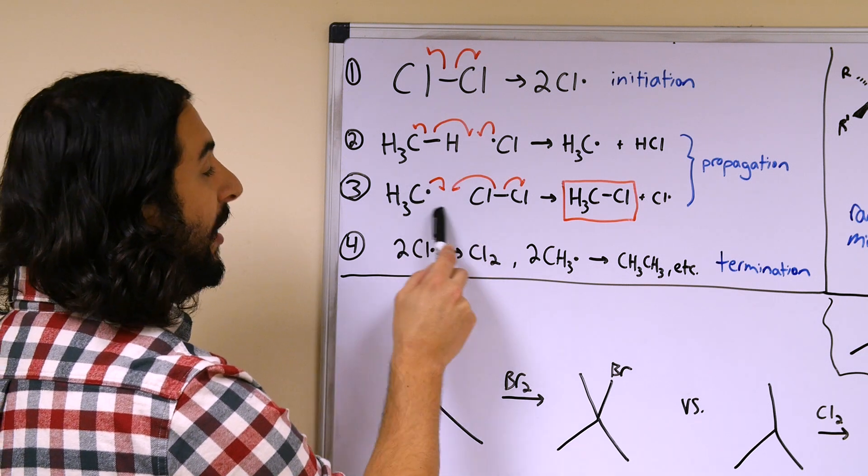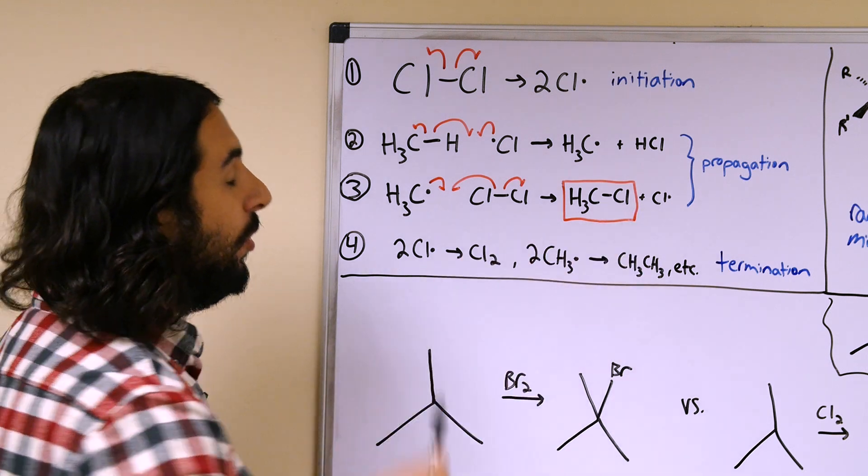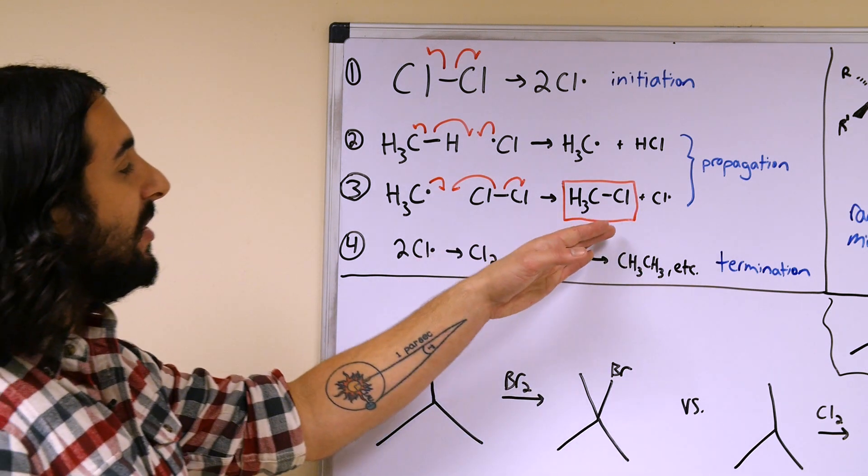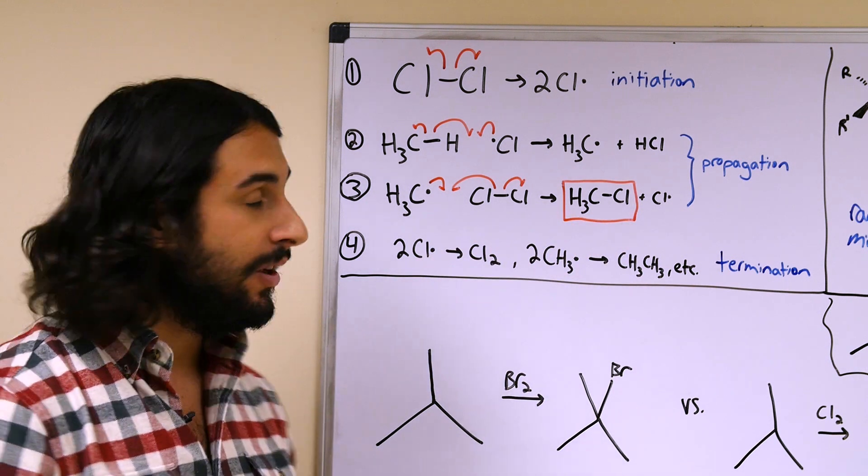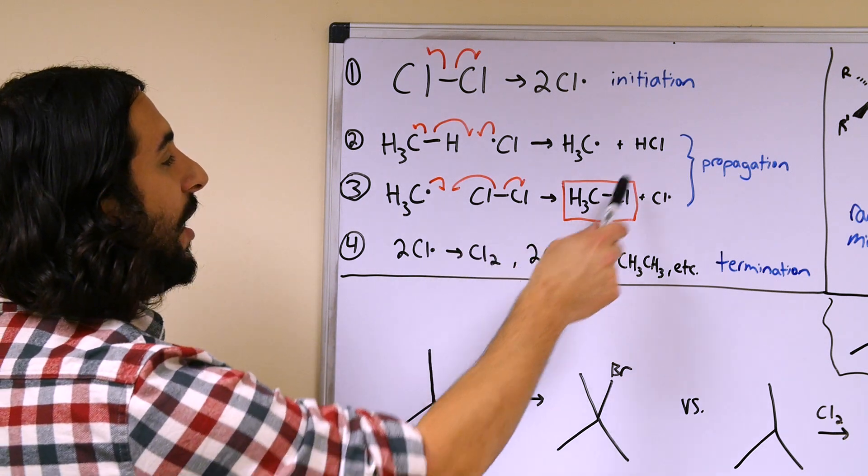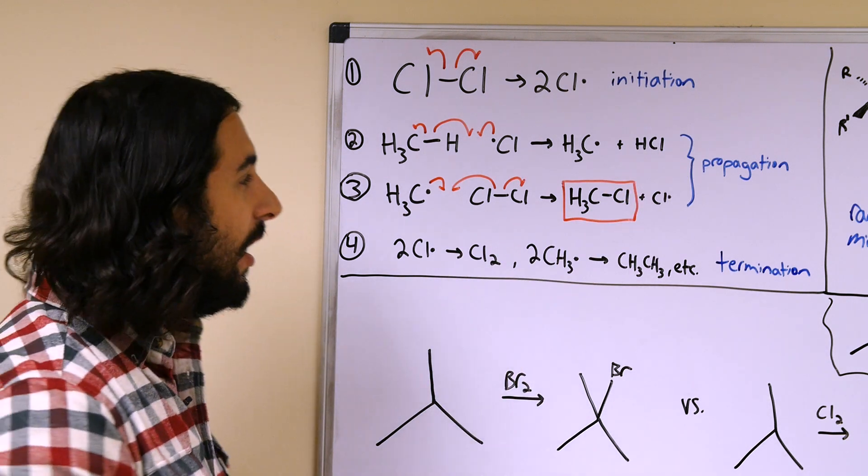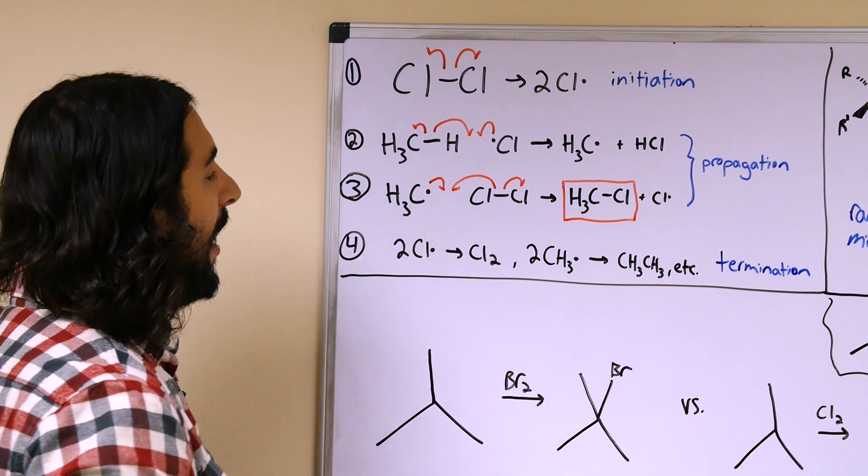It will go ahead and reform or form a carbon-chlorine bond, leaving a new chlorine radical. This is our chlorinated product, and in this case it was generated in a propagation step.